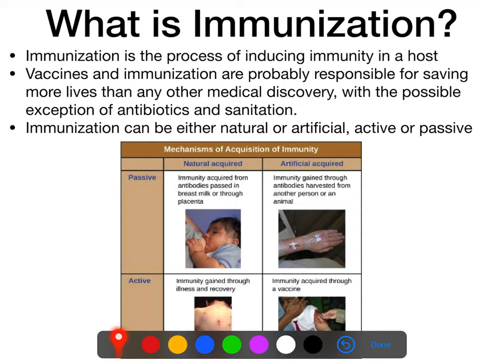Not all immunization is necessarily vaccination. Vaccination is only one specific type of immunization, though it's one we are more concerned about. Immunity or immunization can be either natural or artificial, and it can be either passive or active. Natural versus artificial is a pretty easy distinction — is it happening through some preexistent pathway that does not require human technological intervention? If so, it's natural. Does it require active human technological intervention? If so, it's artificial.